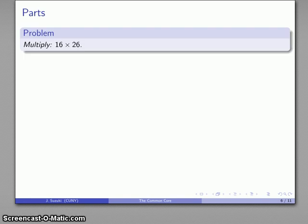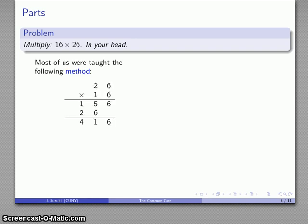Parts. Well, so, for example, here's a problem, and we'll talk about that more in a second, 16 times 26. And I'll say, multiply this in your head. So, most of us were taught the following methods of multiplication. 26 times 16, we wrote down some digits, we did some multiplication, we wrote some things in some places because we were told to do that, and we end up with an answer 416.